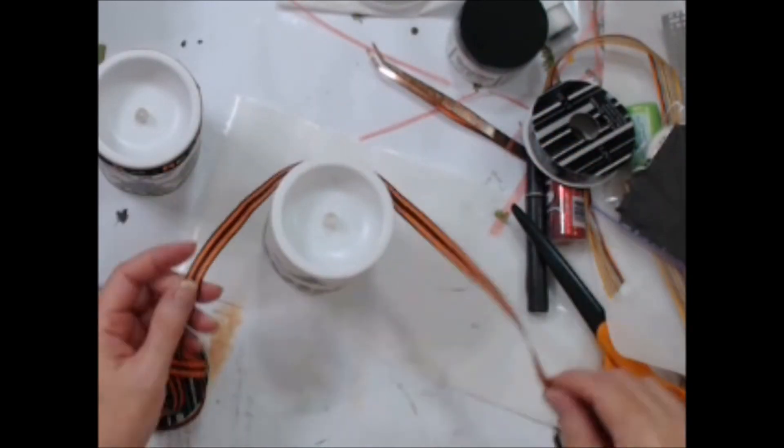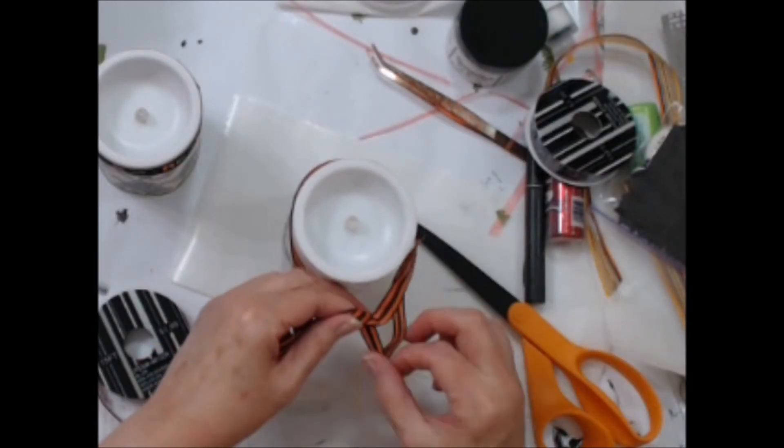Then I found this orange and black striped ribbon and used that on the second candle and tied a bow.